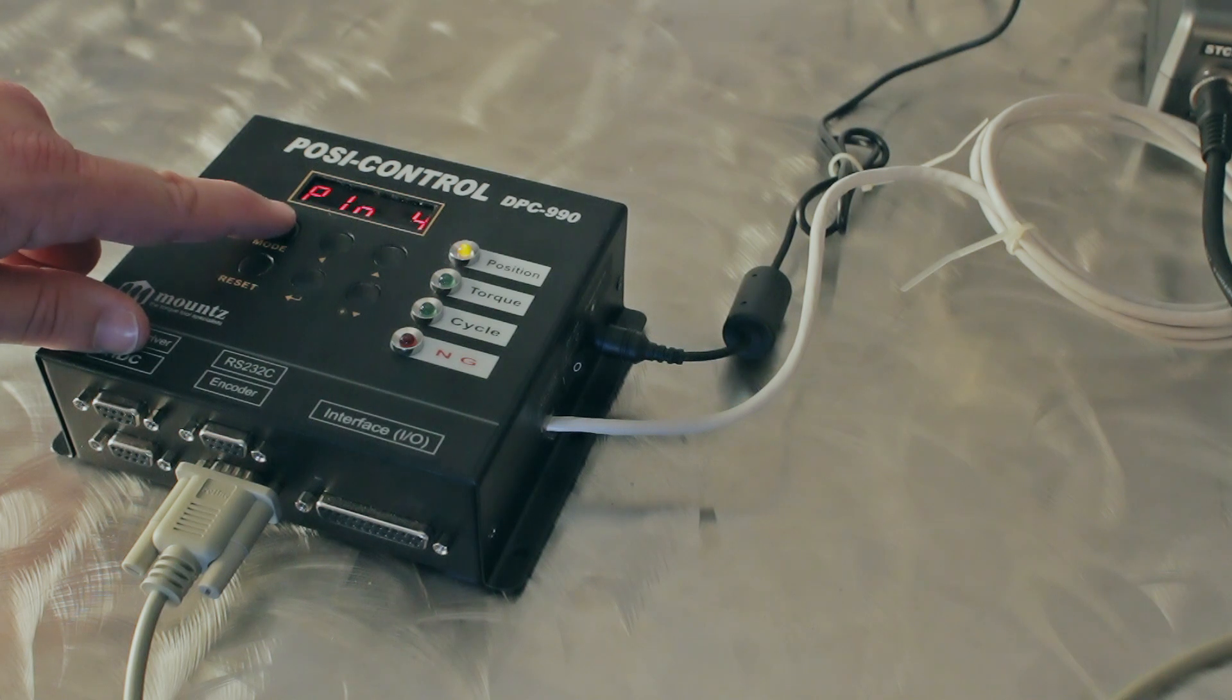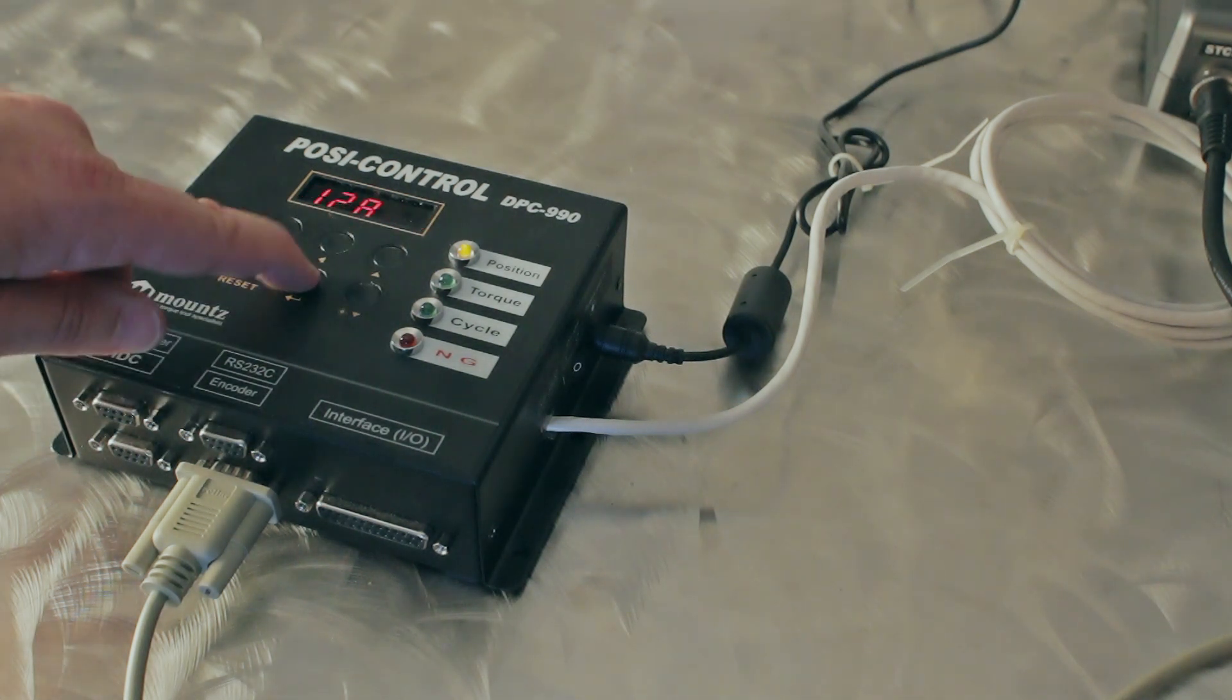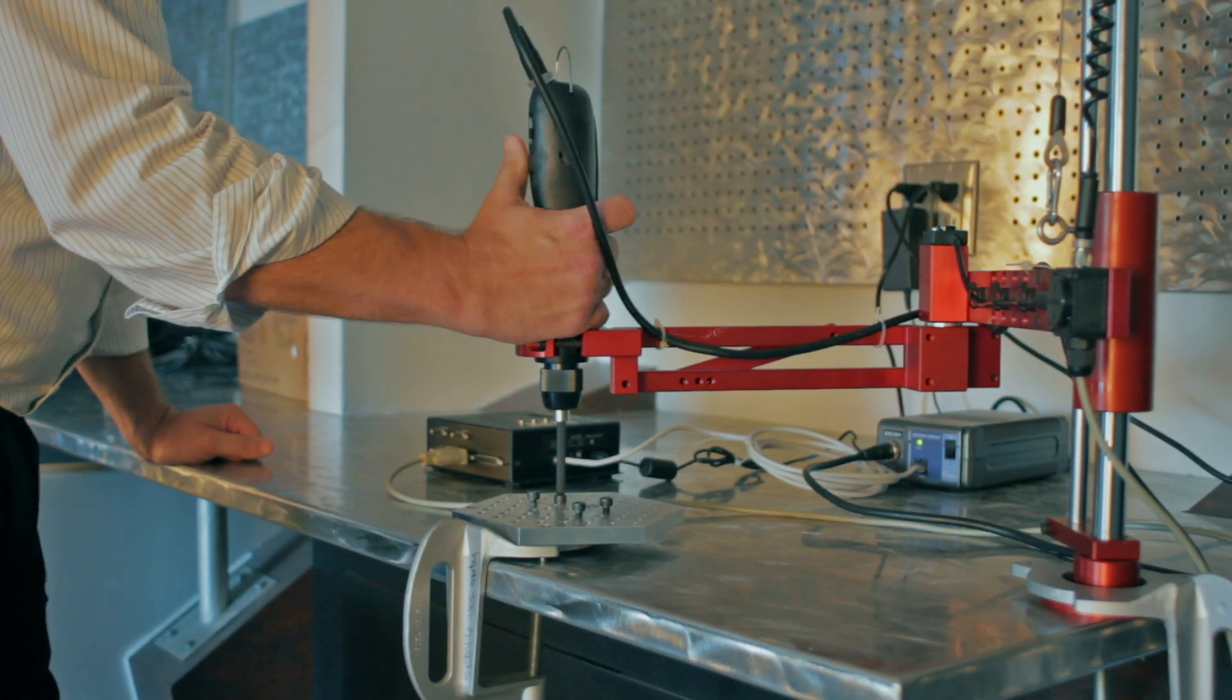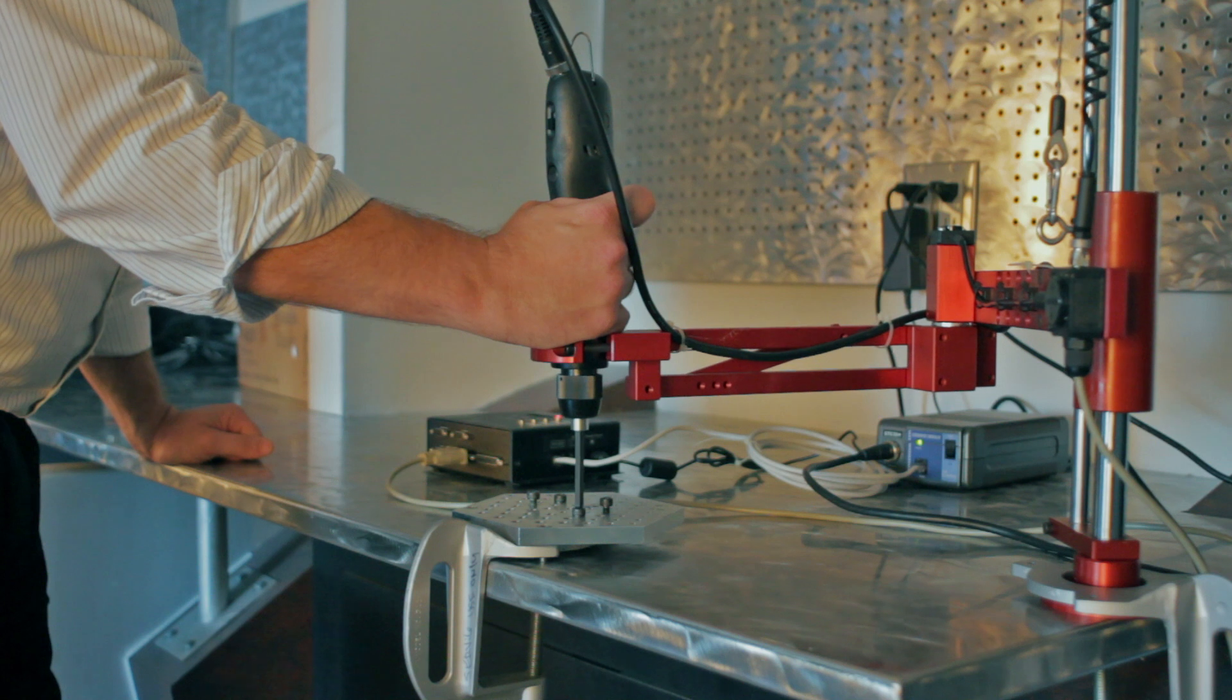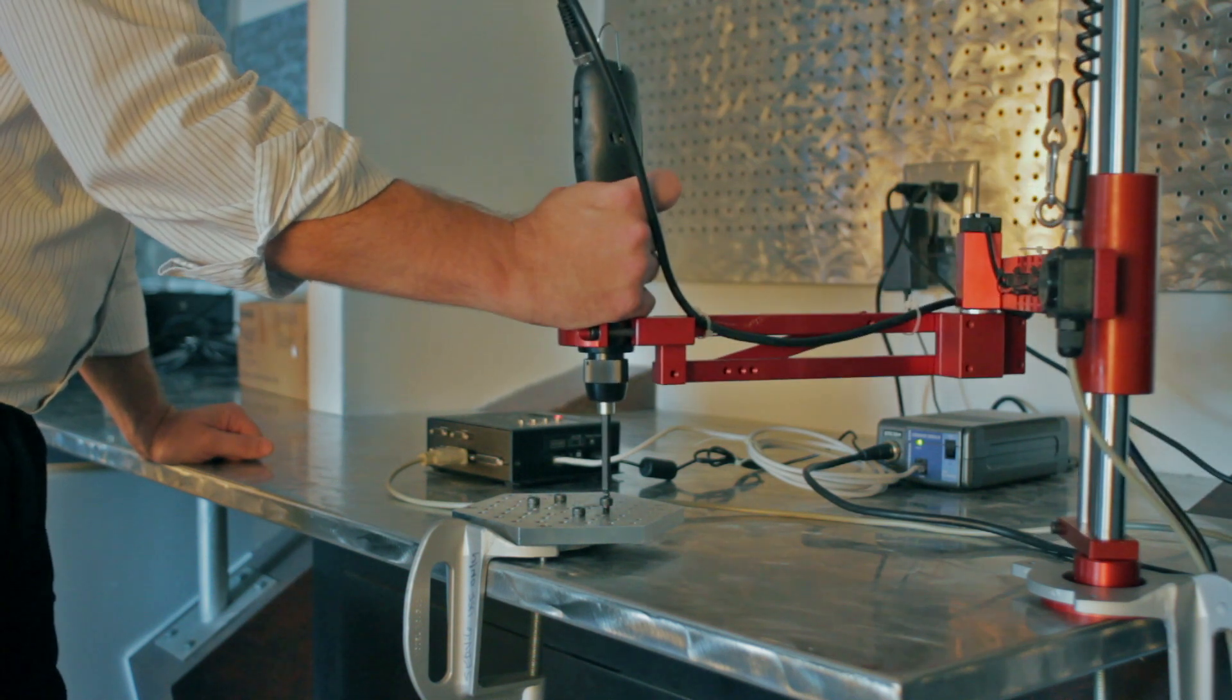To program a ported pneumatic or transformer controller screwdriver, select the program menu and then automatic programming. Run down all of the fasteners sequentially. In automatic mode, the system learns the characteristics of each fastener in the sequence based on the number of milliseconds it takes to reach torque.